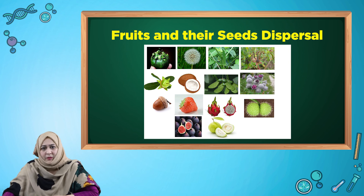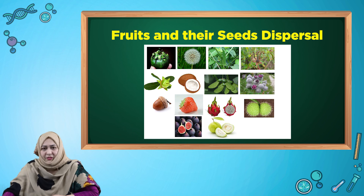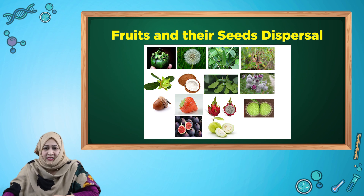Dispersal by animal fur: fruits like cleaver and burdock are dispersed by animal fur, because these fruits have hooks on them.